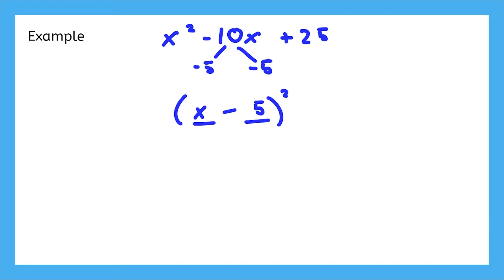You might think that 25 means you should use positive 5, but if we did, then we'd get a positive 10 in the middle. By using negative 5, we guarantee that the middle coefficient will come out to negative 10.